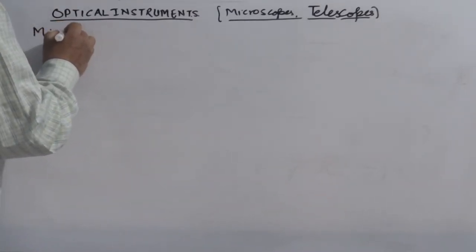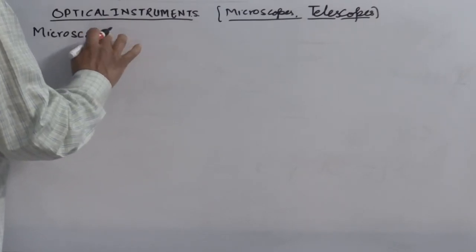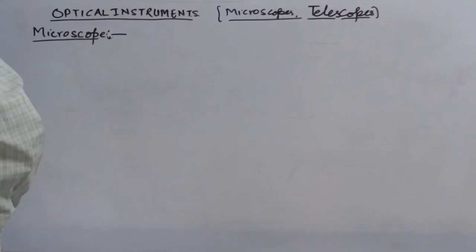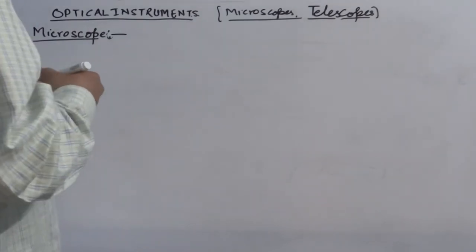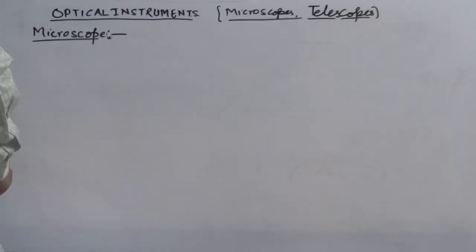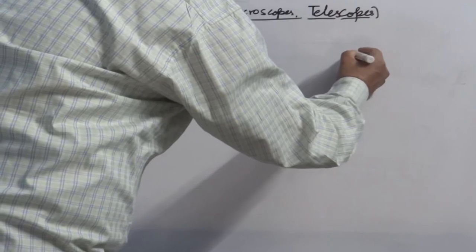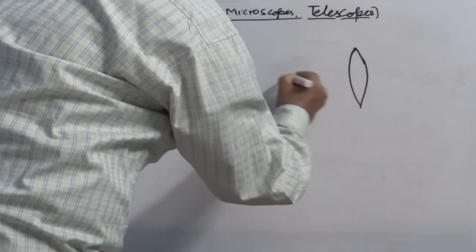A microscope is a device used to observe a magnified image of a tiny object. First is the simple microscope. A simple microscope is just a convex lens — when a convex lens is used in a particular case, it starts behaving as a simple microscope. We also commercially call it a hand lens.